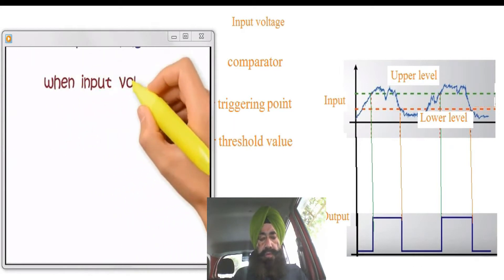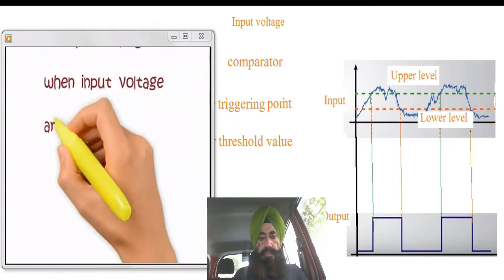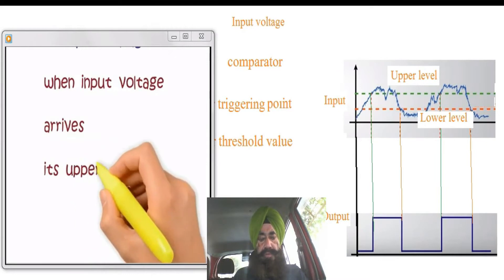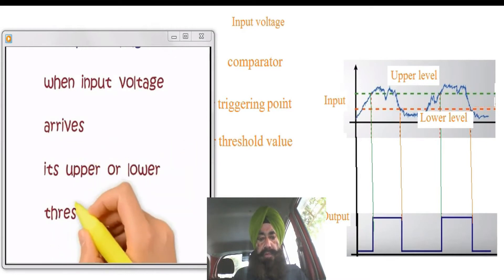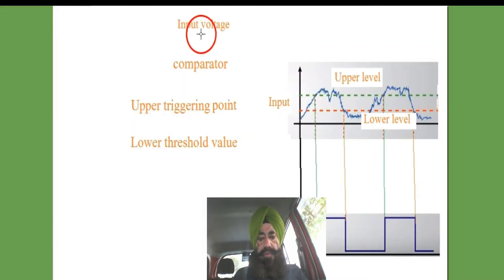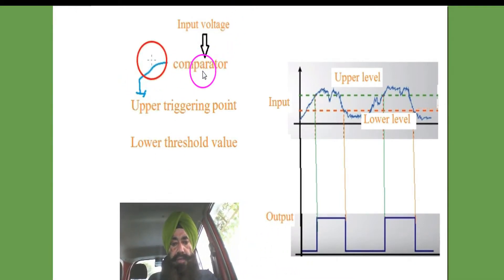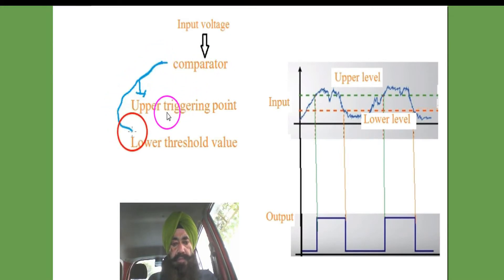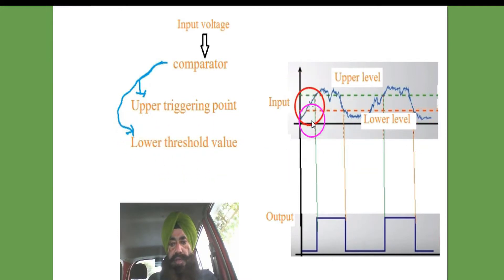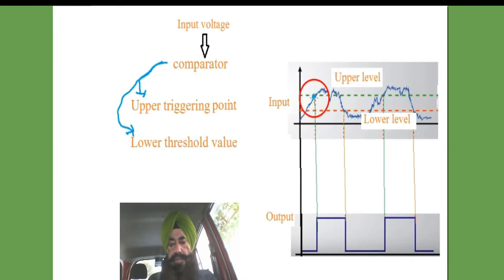When the input voltage arrives at the upper or the lower threshold values, the comparator compares with the upper triggering point and the lower threshold value. The input is varying like this, as upper threshold value.